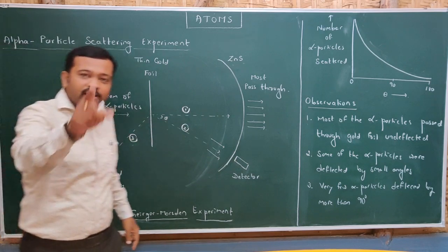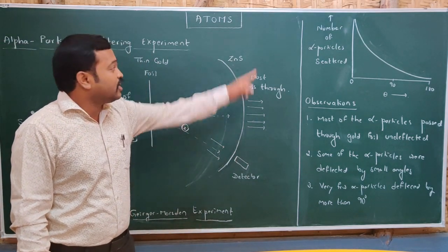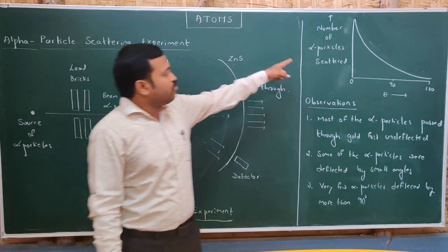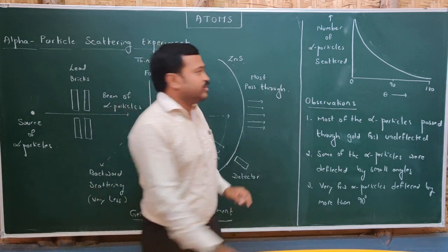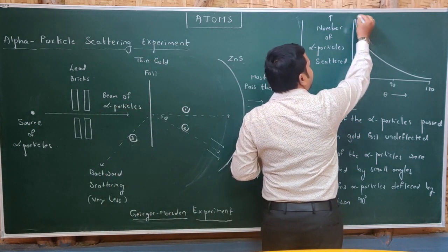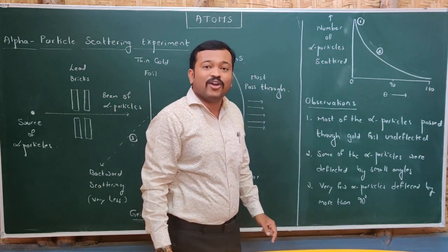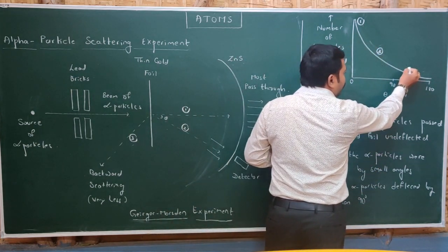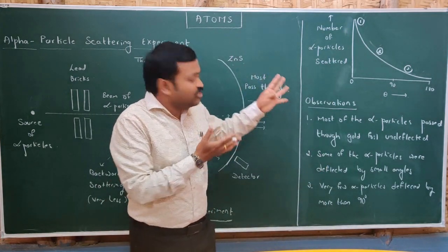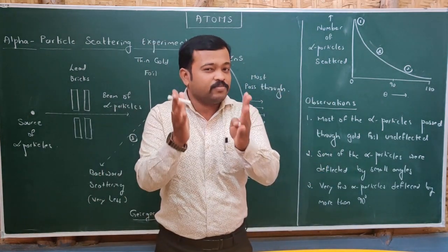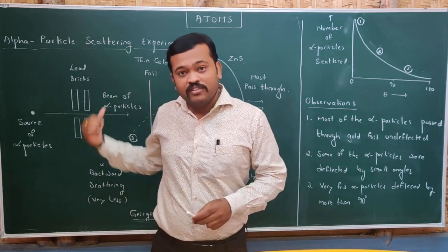The third observation was that very few alpha particles deflected by more than 90 degrees — only about one in eight thousand. These were the three observations made by Geiger and Marsden, based on a graph plotted between the number of alpha particles scattered and the scattering angle. From this graph, they concluded that most alpha particles were undeflected, some deflected at small angles, and very few deflected more than 90 degrees.